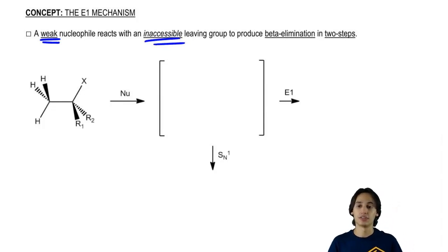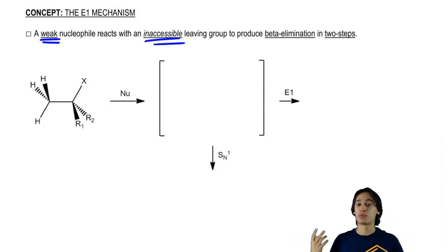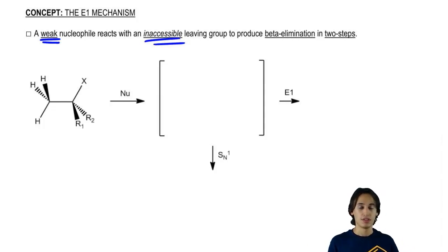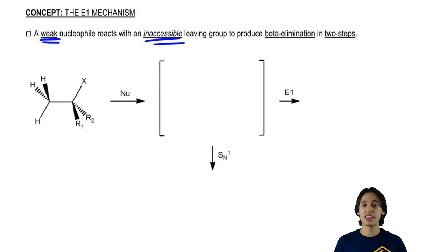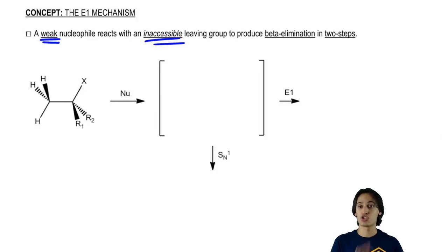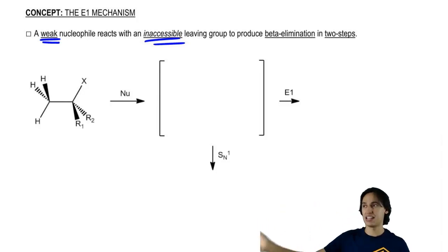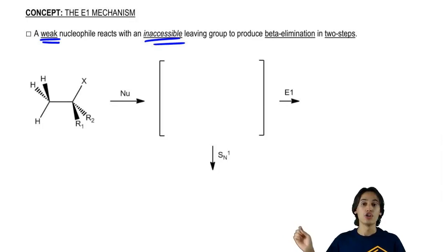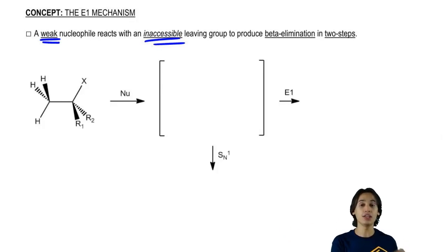Let's start right there. Remember another mechanism we talked about that had similar conditions? Yes, the SN1. Let's talk about the nucleophile part first. SN1 is favored with what type of nucleophile — strong or weak? Remember that strong favors SN2 and E2, so weak is going to favor SN1 and E1.